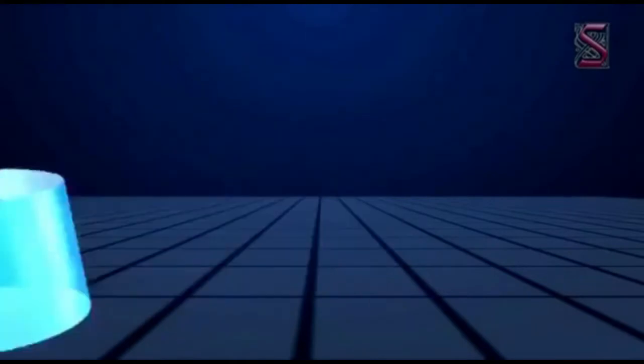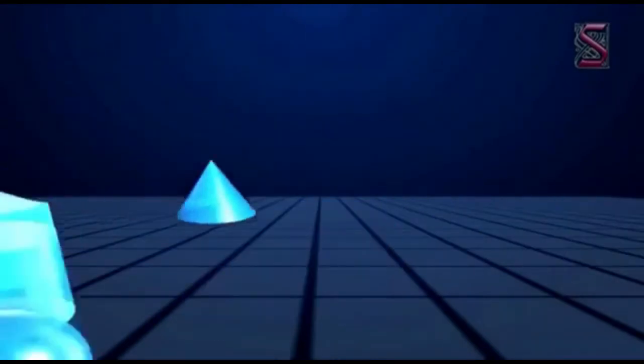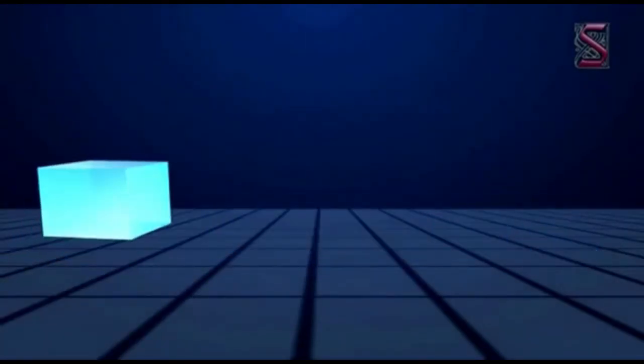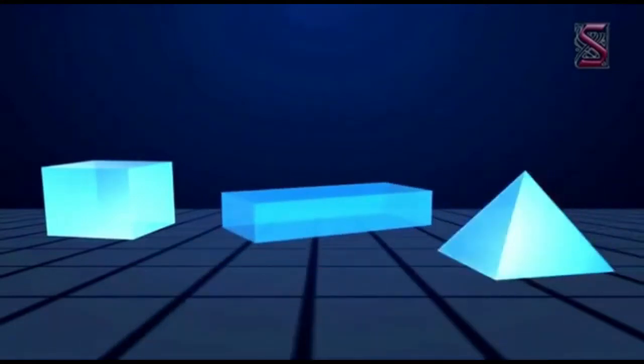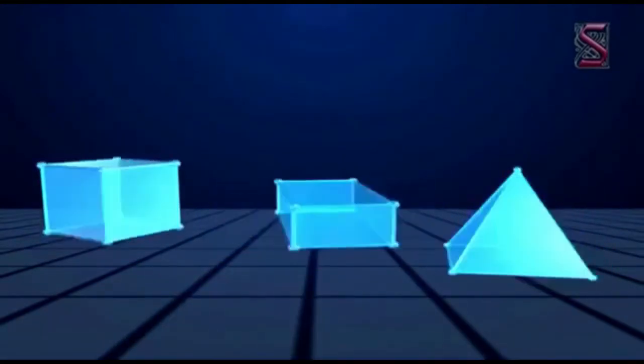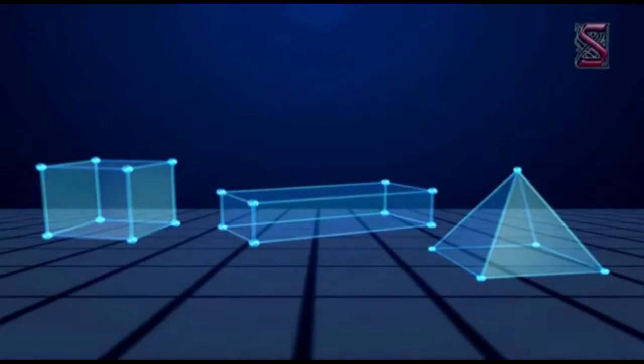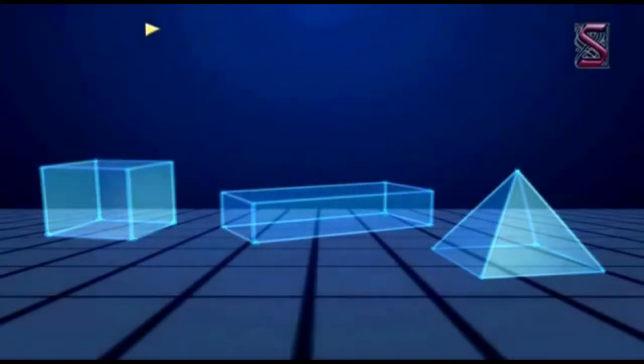All three-dimensional objects have faces, edges, and vertices. The corners of a solid shape are called its vertices. The line segments of its skeleton are its edges, and its flat surfaces are its faces.